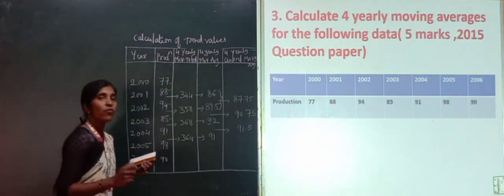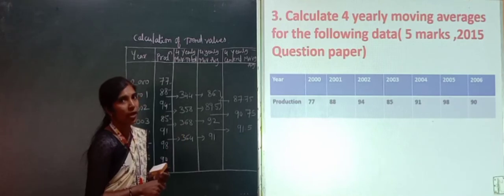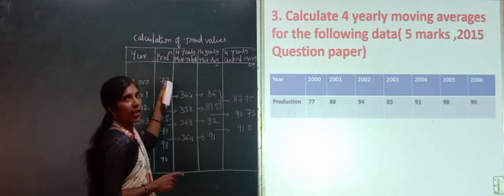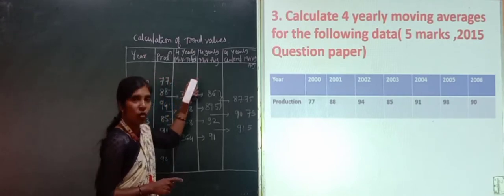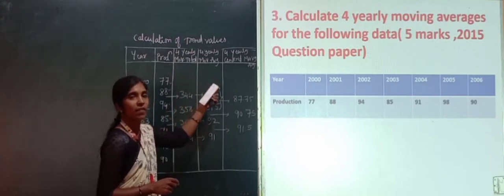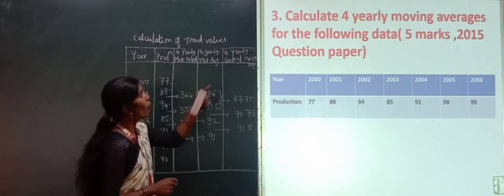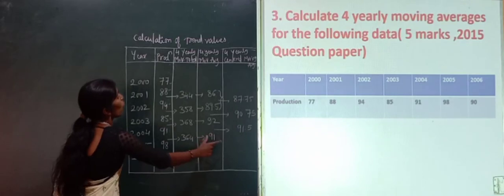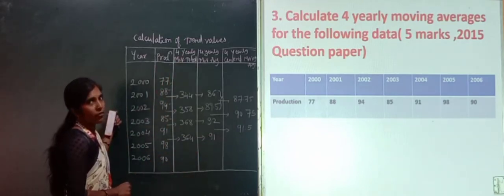In previous videos we solved problems based on 3 yearly or 5 yearly moving averages, which mainly have 4 columns: year, sales or value, 3 or 5 yearly moving total, and 3 or 5 yearly moving average. Under the 4 yearly moving average method, there are 5 columns needed for the calculation of trend values.